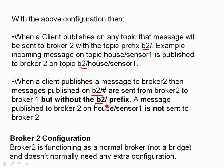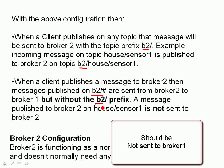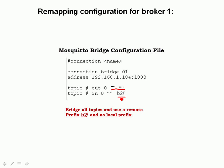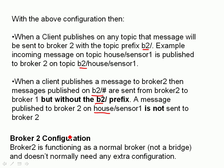So the actual message coming into broker 1 has the prefix removed. A message published to broker 2 on 'house/sensor1' is not sent to broker 1, because it doesn't have the 'B2' prefix. Effectively, what we've configured is broker 1 subscribing to broker 2 on topic 'B2/#'. There's no configuration required on broker 2 — it's functioning as a normal broker, not as a bridge.